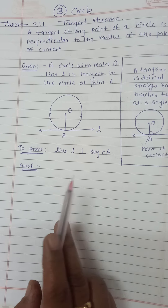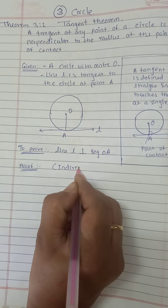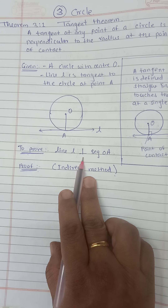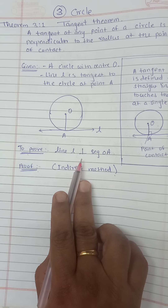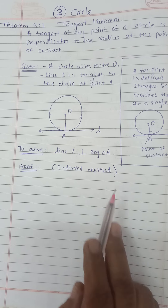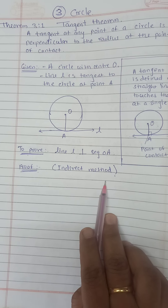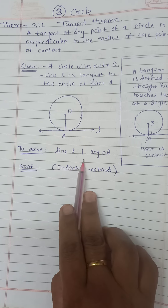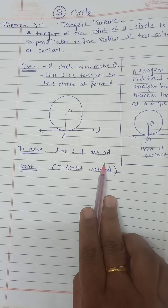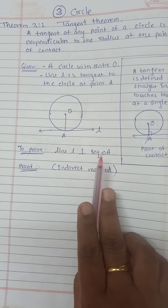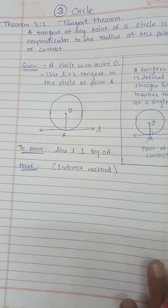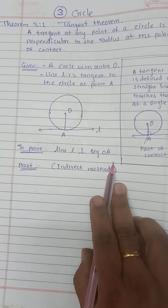We have to prove this theorem by the indirect method. That means we'll assume that line L is not perpendicular to OA, and whatever assumption we have taken, we have to prove that the assumption is wrong — which will show that line L is perpendicular to OA. So in the indirect method, we take the assumption that line L is not perpendicular to OA, and then in the proof we show that this assumption is wrong.